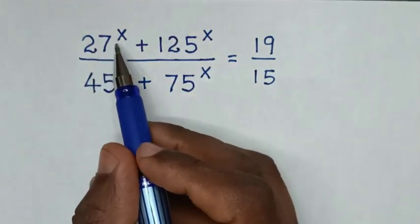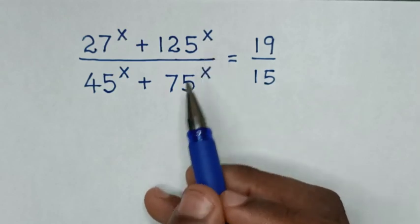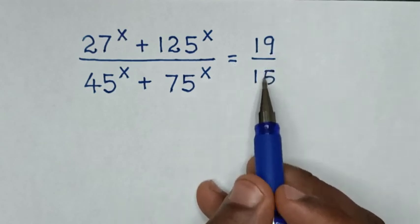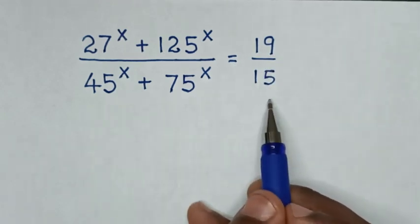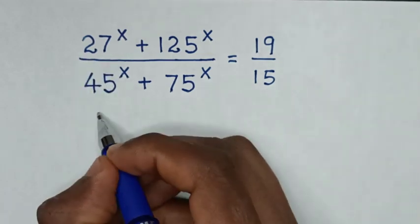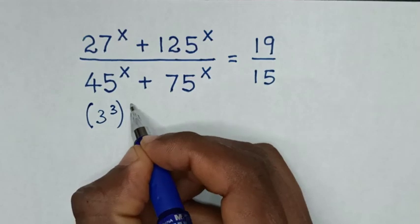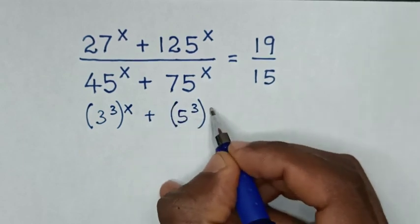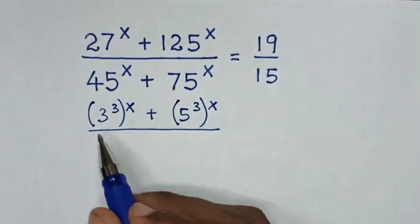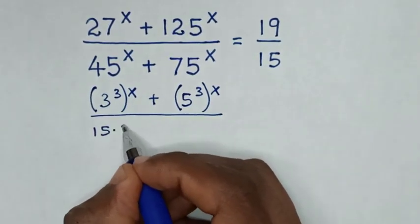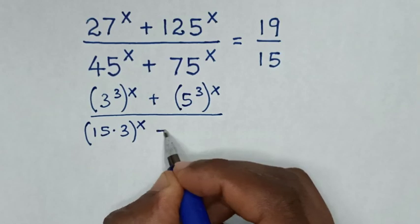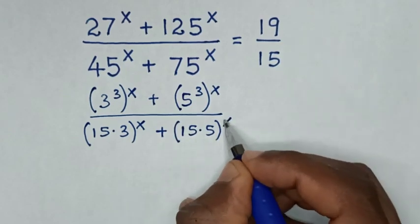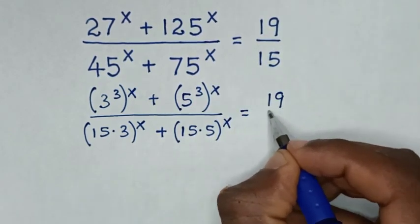How to solve: 27^x plus 125^x over 45^x plus 75^x equals 19 over 15. To find the values of x from this equation. Now, 27 is the same as 3 to the power of 3, 125 is the same as 5 to the power of 3, 45 is the same as 15 times 3, and 75 is the same as 15 times 5. So the equation becomes (3³)^x + (5³)^x over (15·3)^x + (15·5)^x equals 19 over 15.